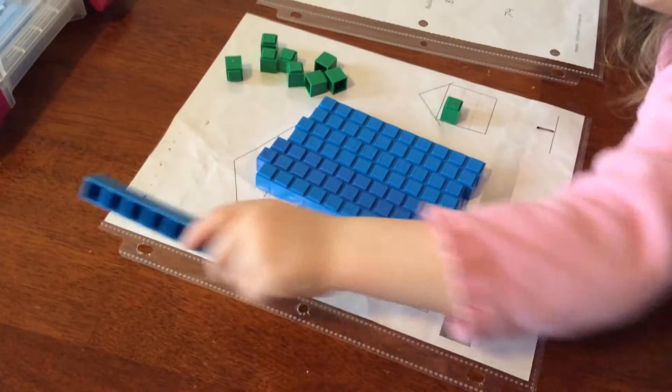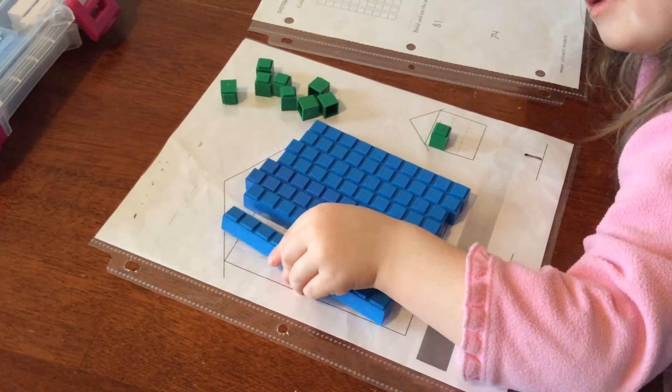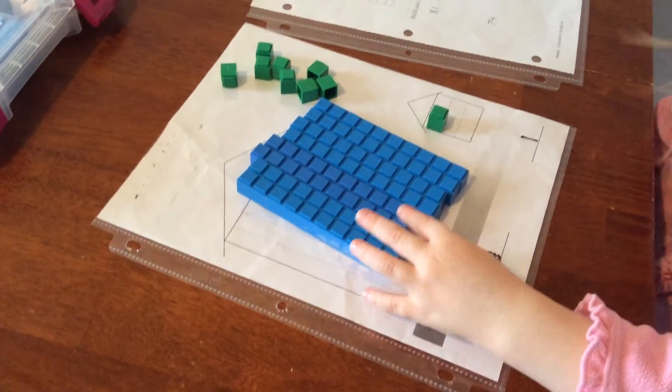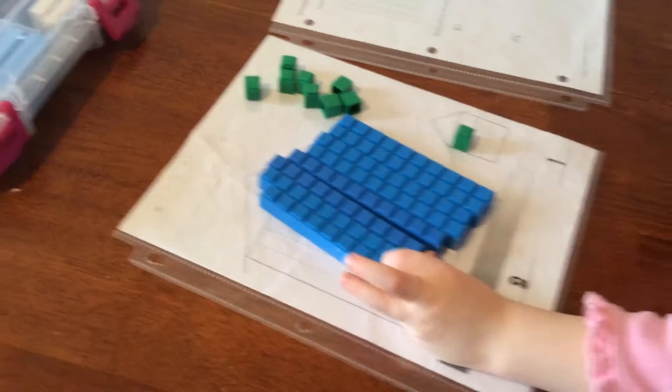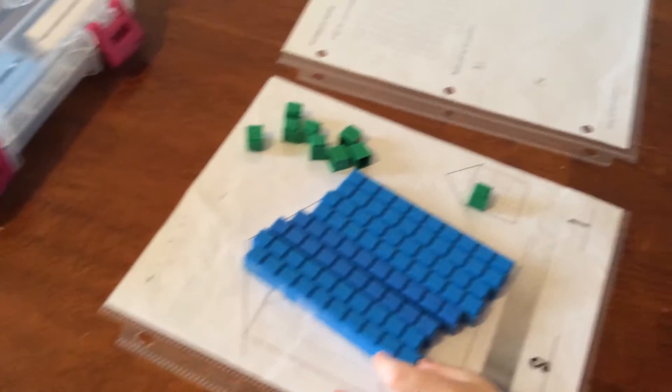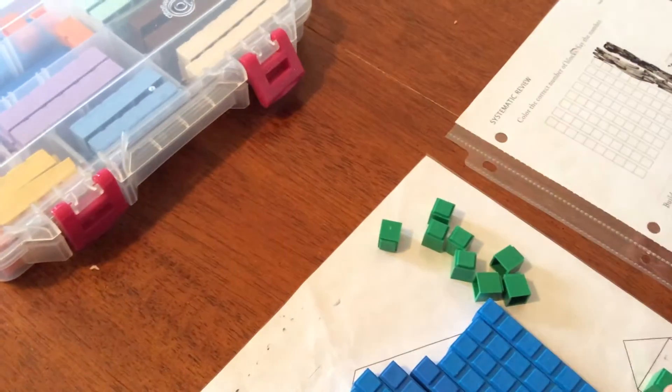So how many more do you need? 8. What number is that? 8. What's the whole number right here? 81. 81. Good job, sweetheart. So this is 81, so we did that one.